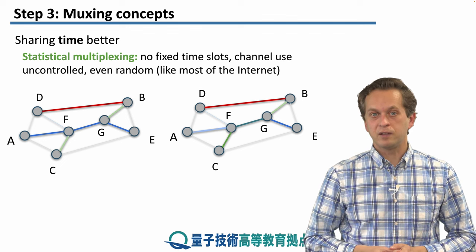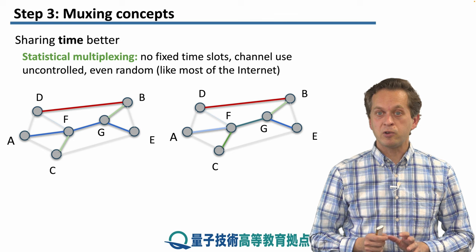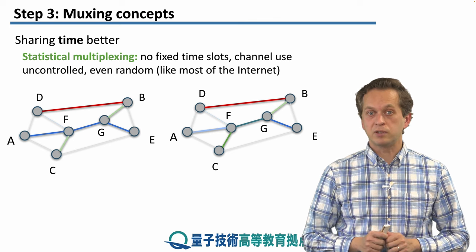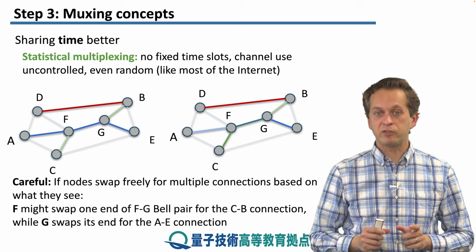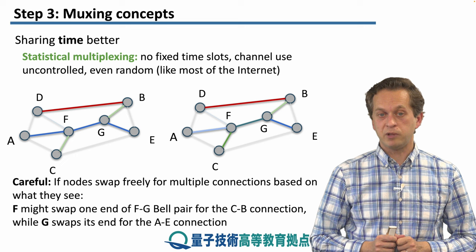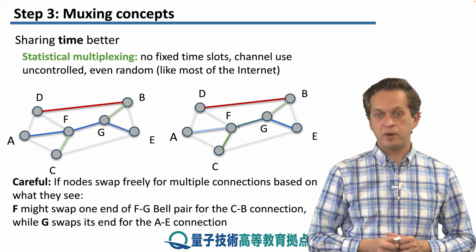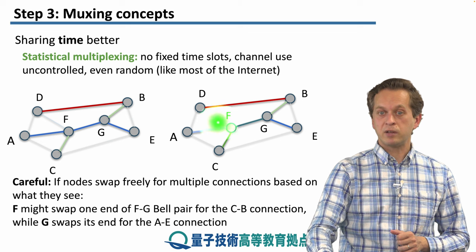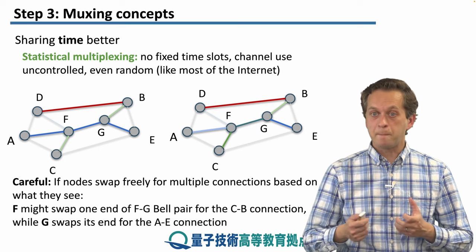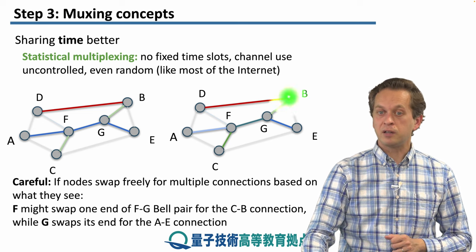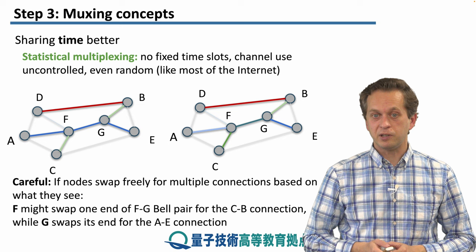A different way of sharing time is called statistical multiplexing, which addresses that question. Now there are no fixed time slots — channel use is uncontrolled and even random. This is how the classical internet works most of the time. But we must be very careful when using statistical multiplexing in quantum networks. Imagine F swaps one end of an FG bell pair for the CB connection, trying to establish entanglement between C and G. But G instead swaps bell pairs dedicated to the A-to-E connection. This is a problem that we must address in quantum networking.